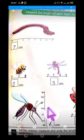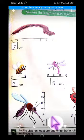Zero, one, two, three, four, five, and arrow, six. This mosquito is six centimeters.